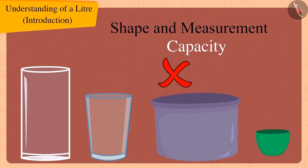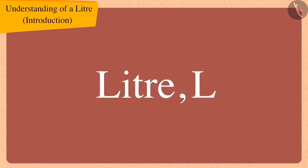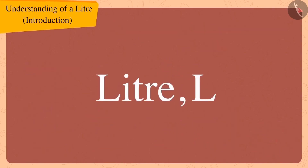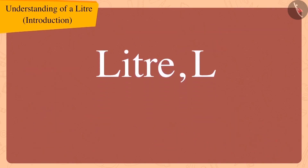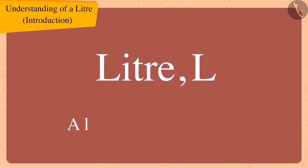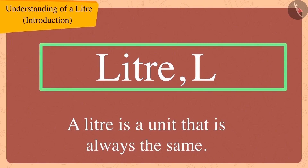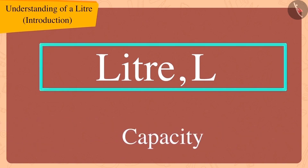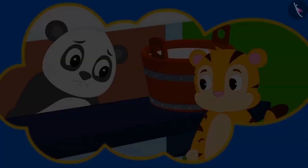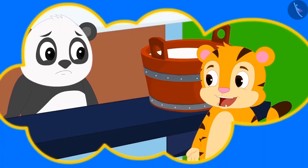To solve this problem, we use a unit called litre. We write this as L. A litre is a unit that is always the same, so we can measure the capacity of utensils with the help of litre. We represent it with the sign L.